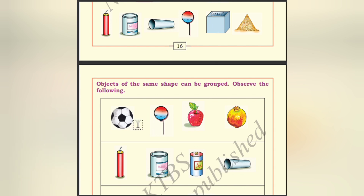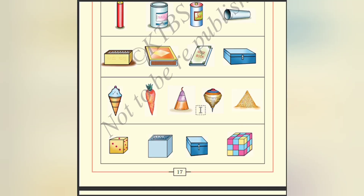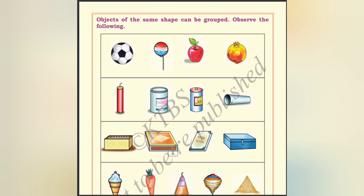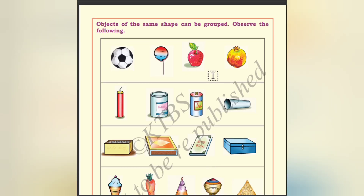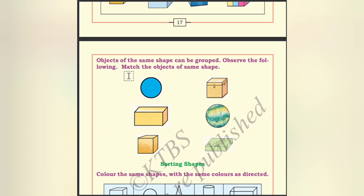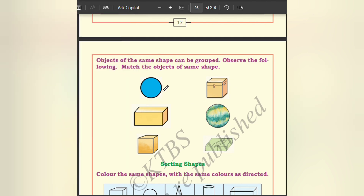Objects of the same shape can be grouped. For example: ball, balloon, apple, and pomegranate — these are circle shapes. Candle and milk container have cylindrical shape. Next are rectangular-shape objects, then triangular-shape objects, and square-shape objects. These objects are not properly arranged, but in this video we can see the pattern: circle, cylinder, square, rectangle, and triangle.